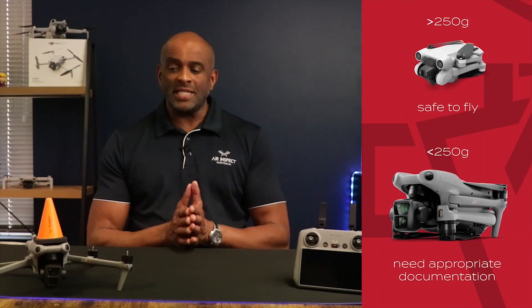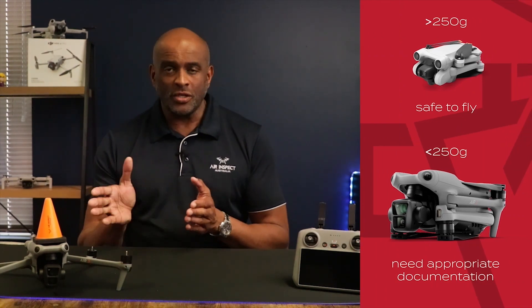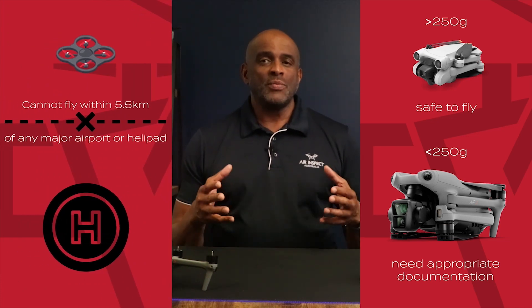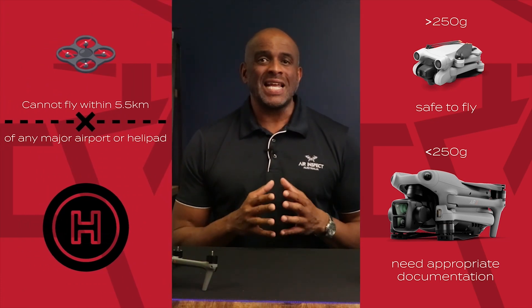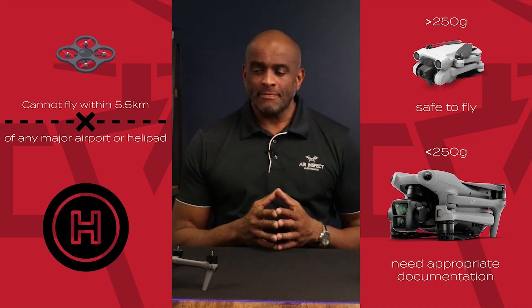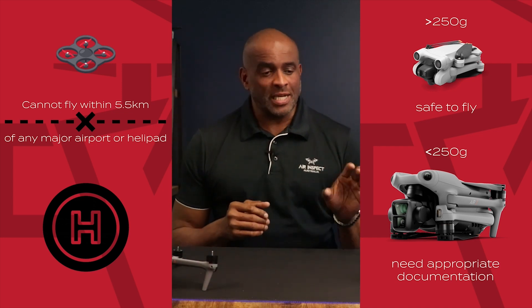If your drone weighs more than 250 grams, which this one certainly does, you cannot fly within 5.5 kilometers of any major airport or helipad. There will be an alert that comes from your RC remote if you are within these zones. These were just a few basic rules and regulations set out in Australia. We follow the rules set out by the Civil Aviation and Safety Authority, or CASA for short. Click on the link below to get a better understanding of where you can or cannot fly your drone.